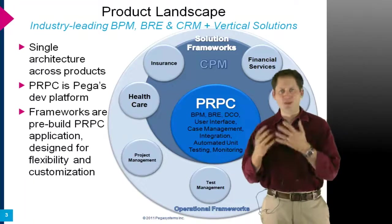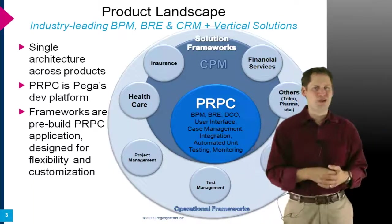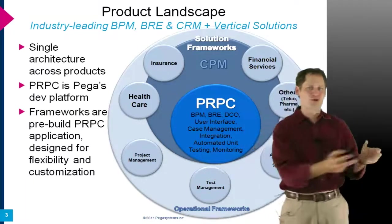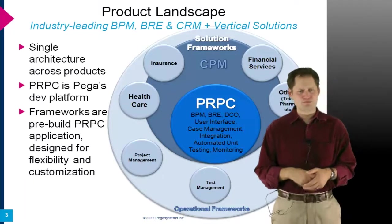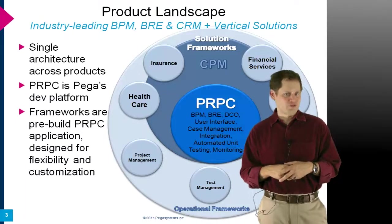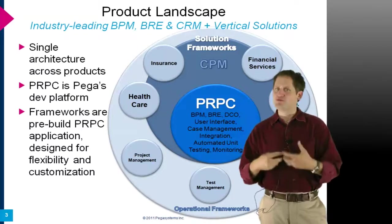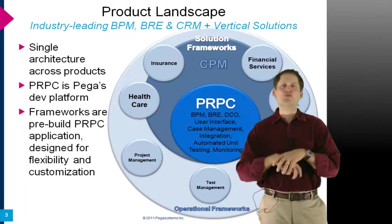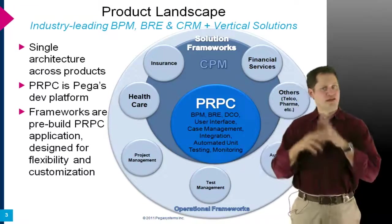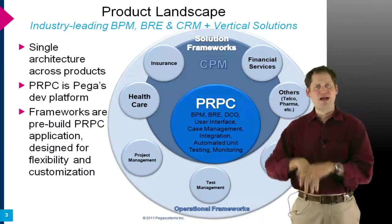Examples include financial services — opening a new account or managing payment exceptions — and healthcare for processing claims adjudication or onboarding new customers, or insurance for managing global claims across a wide enterprise. We also have horizontal frameworks, the largest being CPM, or Customer Process Manager, where we've taken PRPC technology and through building processes, rules, and screens enabled it to be a full customer service desktop — including telephony integration, a 360-degree view of the customer, dialogue scripting, and interaction management.